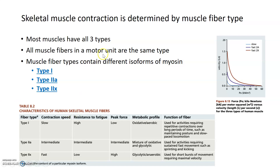Skeletal muscle contraction, which we've spent the past three portions of this lecture discussing, is determined by the type of muscle fiber. And the type of muscle fiber is determined by the myosin that that muscle fiber or cell expresses. There are three different types or isoforms of myosin: type 1, type 2a, and type 2x. Depending on the type of myosin within the muscle fiber, that determines the fiber's characteristics.